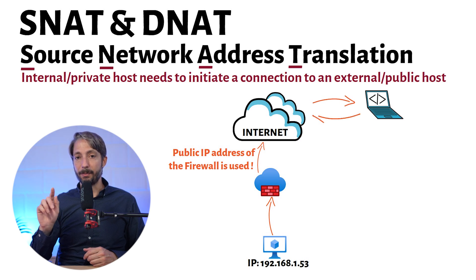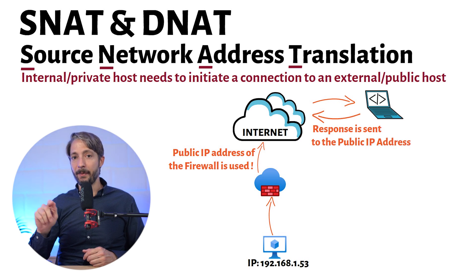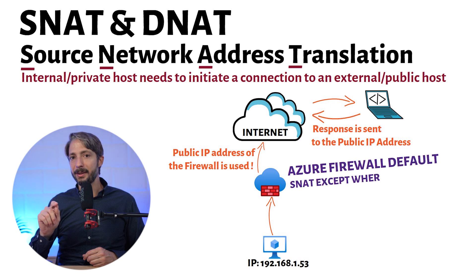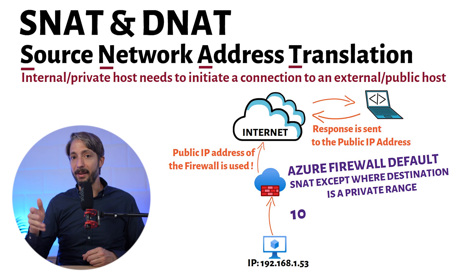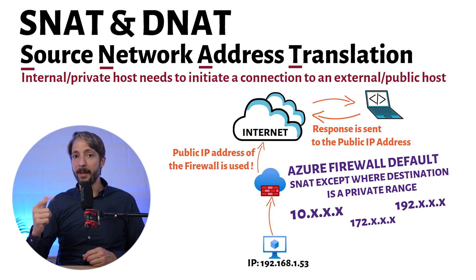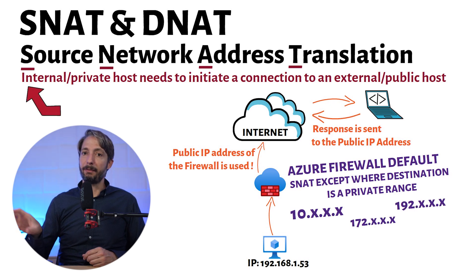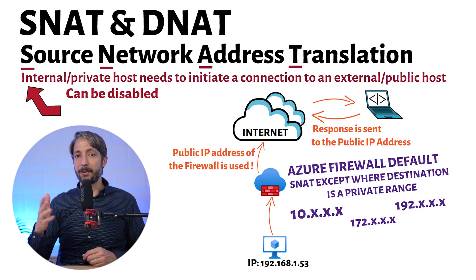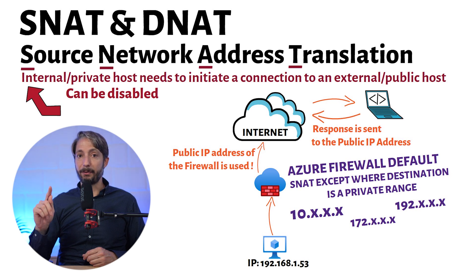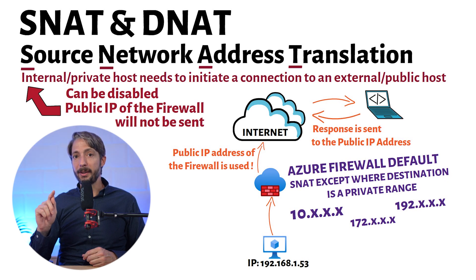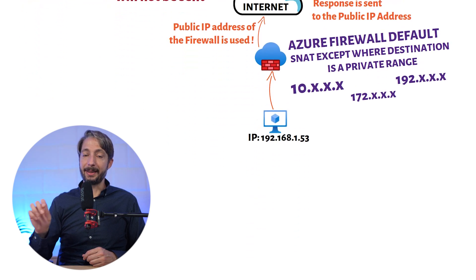The internet host sees that the packet comes from the public IP of the Azure Firewall and sends the request back there. By default, the Azure Firewall performs SNAT on all IP addresses except the official private ranges such as the 10, 172, and 192 ranges. You can manually configure ranges to avoid SNAT or disable SNAT altogether. If you disable SNAT, the firewall would not send a public IP address to the host on the internet — the host would try to reply to the private IP address that the internal host sent the request from.